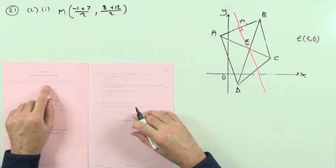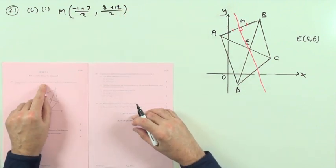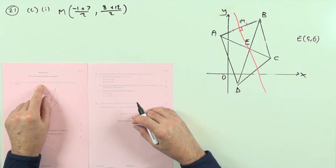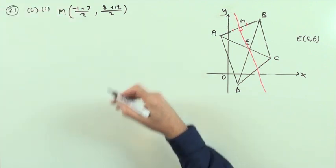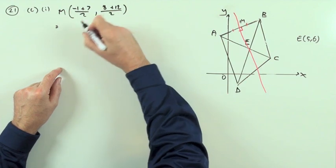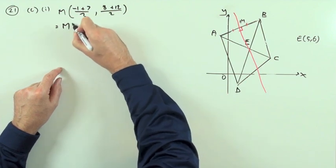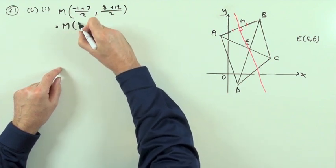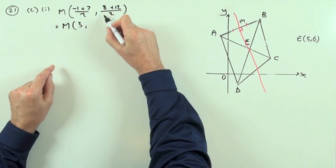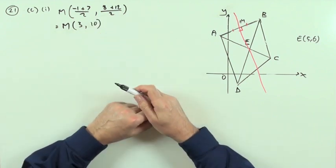Or you can just think what's halfway between, what's halfway from -1 to 7 and what's halfway from 8 to 12 if you prefer. Because there's only the one mark no matter how you set it out. Which means that M is going to be the point that's 6 divided by 2 is 3 and that's 20 divided by 2 is 10. So M is the point (3, 10).